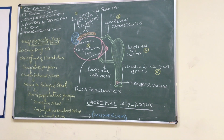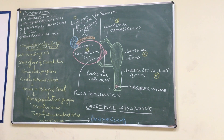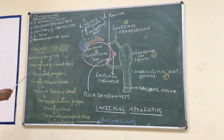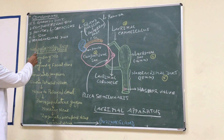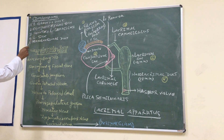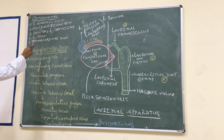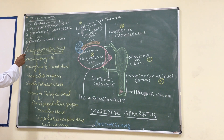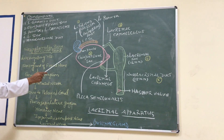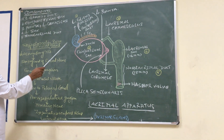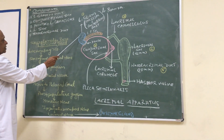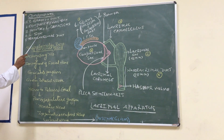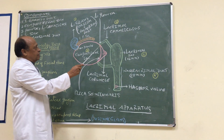This lacrimal apparatus is concerned with secretion and drainage of lacrimal fluid. The component parts are: first, the lacrimal gland and its duct; second, the conjunctival sac; and third, the puncta and lacrimal canaliculi.